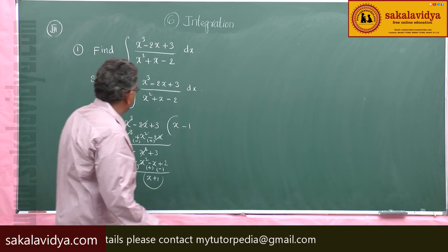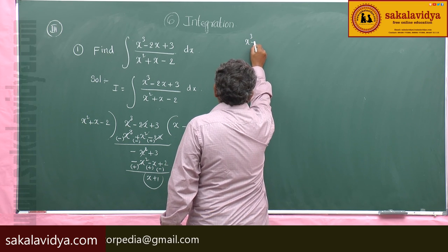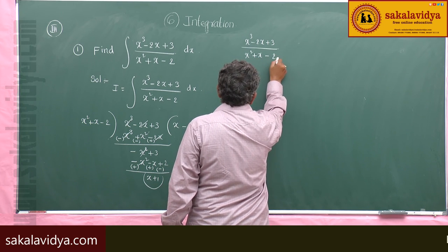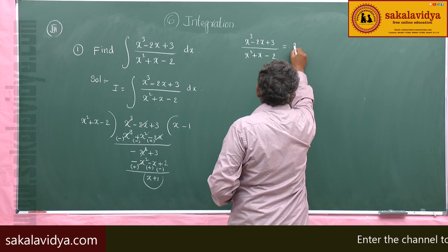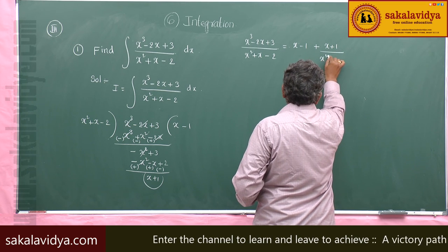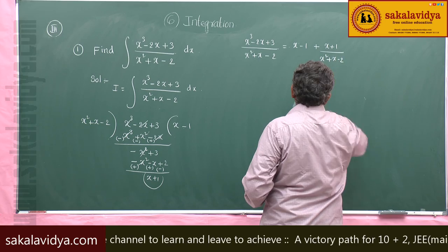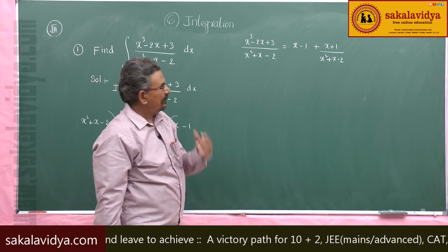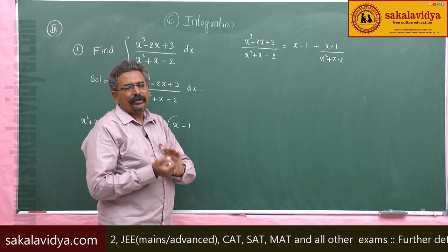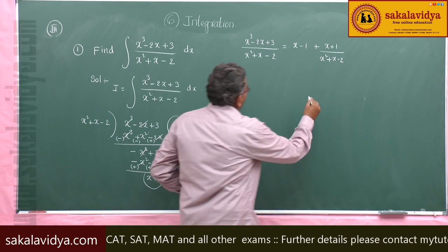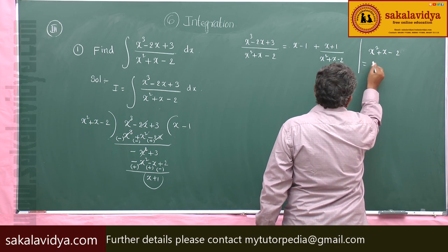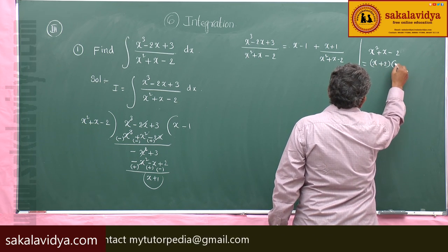So x³ − 2x + 3 divided by x² + x − 2 can be written as the polynomial (x − 1) plus the proper fraction (x + 1) / (x² + x − 2). Now this is a proper fraction, and x² + x − 2 is a reducible quadratic factor, so we can express it as a product of two linear factors.